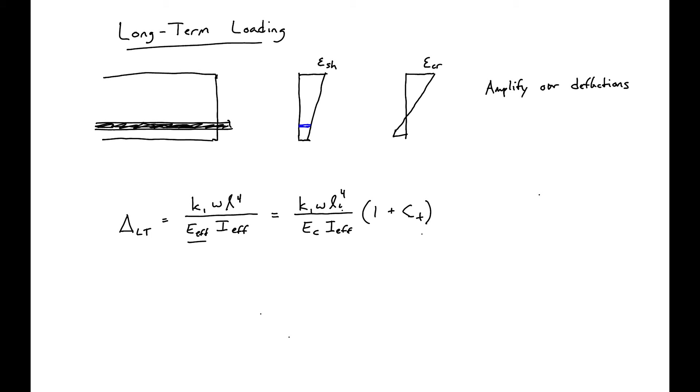This is just our short-term deflection. Our long-term deflection is our short-term times 1 plus the creep coefficient. Because of this amplification, we'll use a different factor called lambda. Our deflections will be equal to Δshort-term times 1 plus λt.